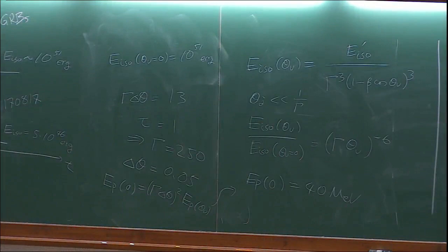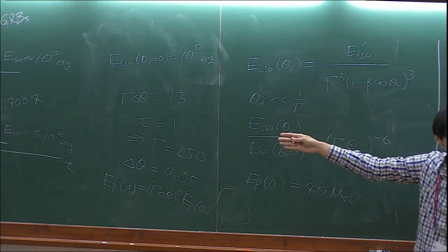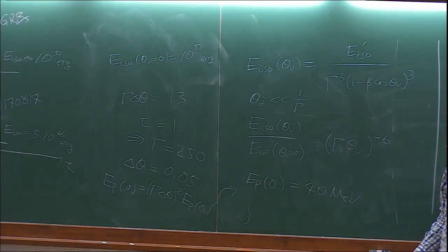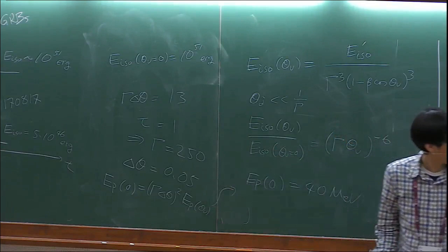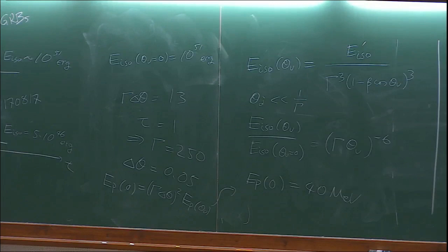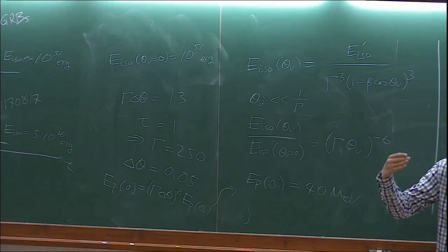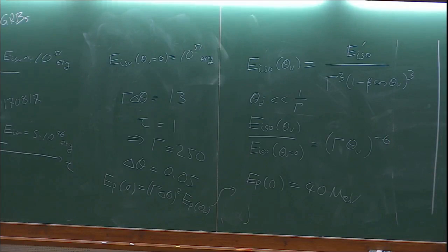This is actually the main difficulty of the off-axis emission model. If you want everything to be consistent - E-iso is typical, this can emit photons meaning tau equals unity - then you get a high Lorentz factor. And you have to be very close to the jet axis. So you are in a regime where you can calculate what E-peak is expected for such a burst. What you conclude is about 40 MeV, which is far above the typical E-peak of short GRBs. We don't see such very high peak energy at this energy of 10 to the 51 ergs.